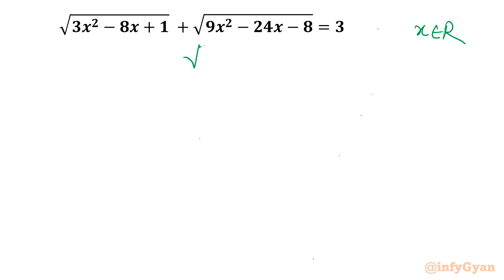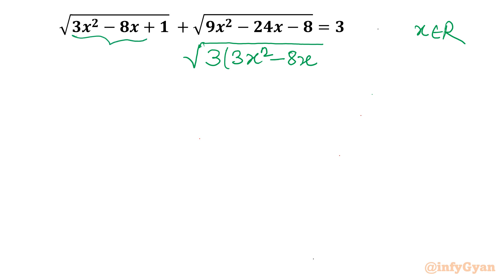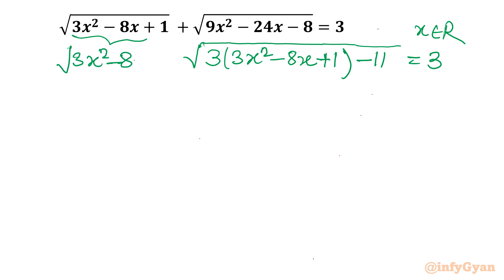Now we will work on the second square root. See what happens once I take 3 as a common factor. Then in the bracket I will get 3x² - 8x, which matches the first two terms of the first square root. To maintain the same value, I write plus 1 inside and adjust: 3 minus 11 gives minus 8, so I need to write minus 11. The first square root is written as is, plus 1.